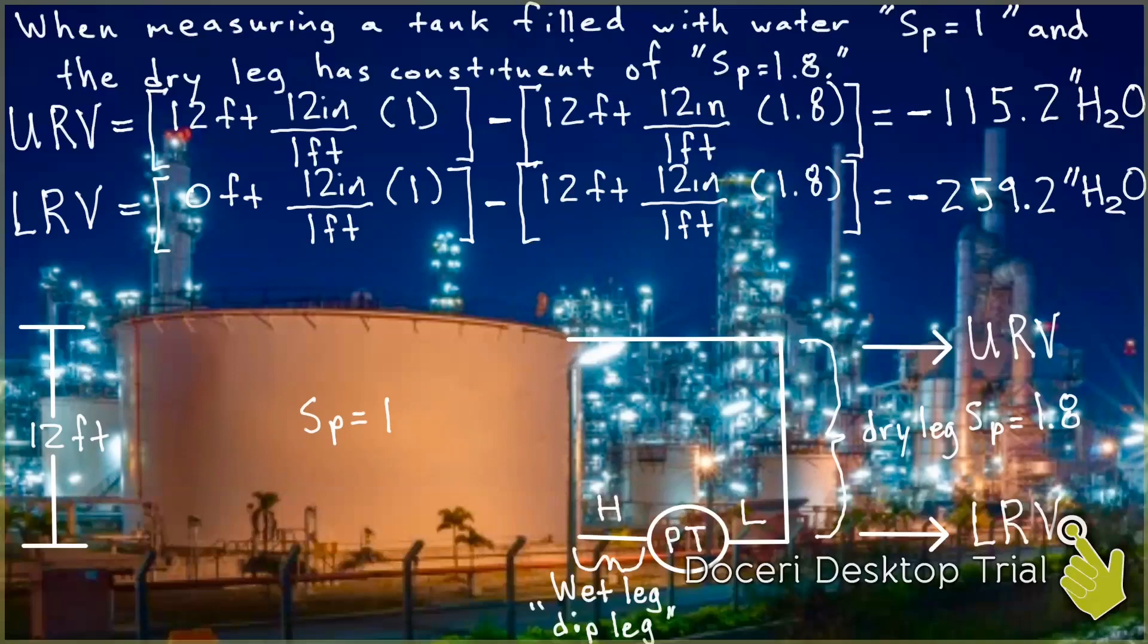So now we're going to calculate our span of calibration. The calibrated span's formula is span equals URV minus LRV. The span is equal to the upper range value minus the lower range value.